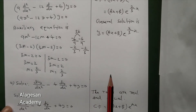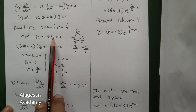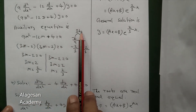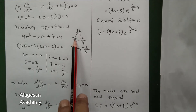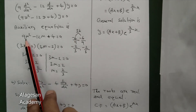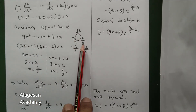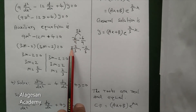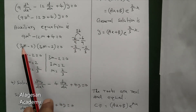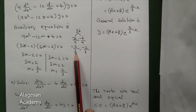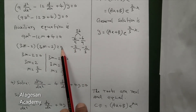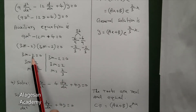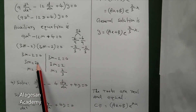Now factorize. 9 multiplied by 4 is 36. We need two numbers that multiply to 36 and add to minus 12: that is minus 6 and minus 6. Dividing by 9, we get minus 2 by 3 and minus 2 by 3. So factorizing: 3m minus 2 into 3m minus 2 equal to 0. Therefore 3m minus 2 equal to 0, so m equal to 2 by 3.